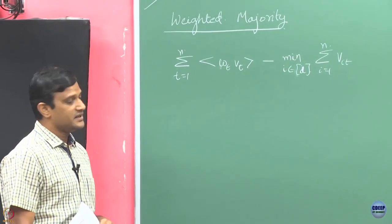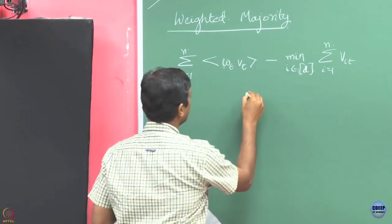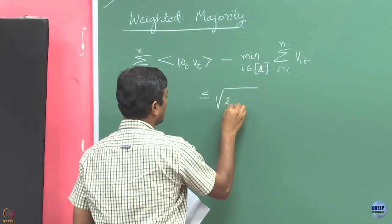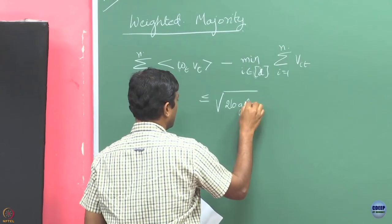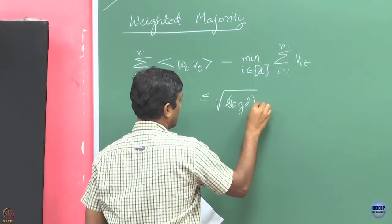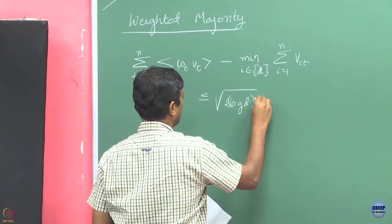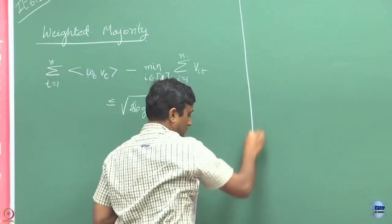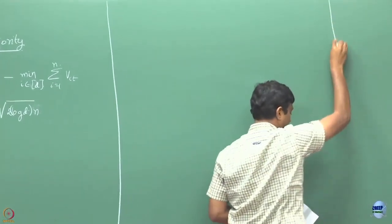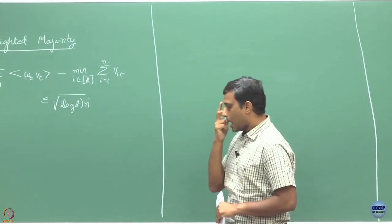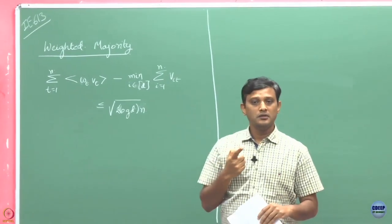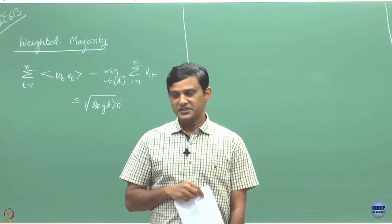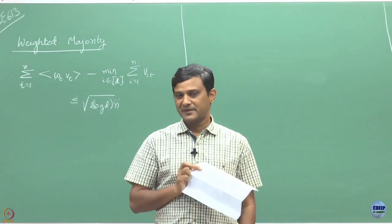We said that the expected regret is going to be upper bounded by 2 times square root of log d times n. Today let us briefly discuss why this is true. One of you asked the question: is it necessary that in this case we have to assume that the adversary generates the label according to some hypothesis H?